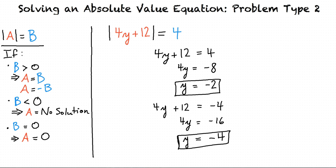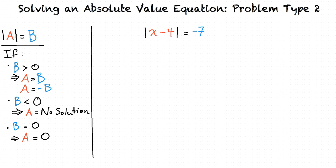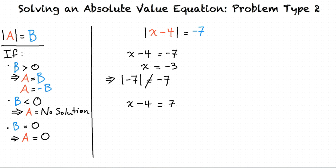This was an example of a case where b is greater than 0. Let's now look at examples where b is less than 0, and where b equals 0. Let's try the absolute value of x minus 4 is equal to negative 7. If we set x minus 4 equal to negative 7, we add 4 to both sides for a result of x equals negative 3. But substituting negative 3 back into the absolute value, the result is the absolute value of negative 7 equals negative 7, which is not true because the absolute value of negative 7 should be positive 7. Then if we set x minus 4 equal to positive 7, we get x equals 11, and substituting back gives the absolute value of 7 equals negative 7, which is also not true. Therefore, negative 7 is not a possible absolute value, and the equation has no solution.